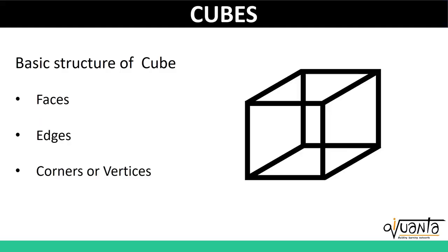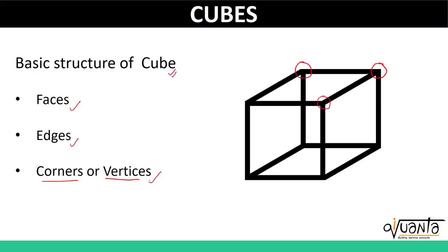The basic structure of a cube has three components: faces, edges, and the corners or vertices. Let us start with corners or vertices of a cube. There are eight vertices or corners in a cube — the ones encircled with red color. These are the eight vertices or corners of a cube.